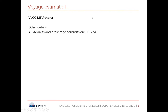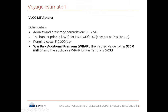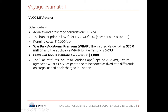Address and brokerage commission in total is 2.5%. Bunker price is $260 per ton for fuel oil and $400 per ton for diesel oil. Running costs for the vessel are $10,000 per day. War risk additional premium: the insured value is $70 million, and the applicable war risk additional premium for Ras Tanura is 0.03% of $70 million. Crew war bonus insurance is $4,000. The flat rate from Ras Tanura to London via the Cape is $20.25 per metric ton. The fixture is agreed at WS 18, fixed on $0.23 per ton to be added as a fixed rate differential on cargo loaded or discharged in London.